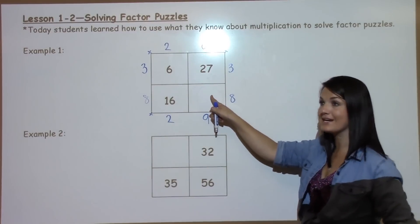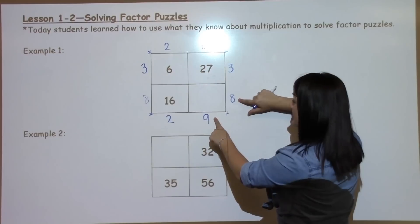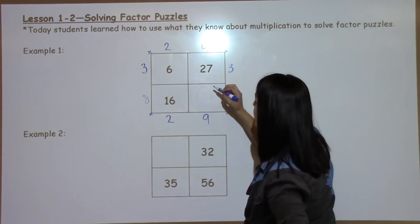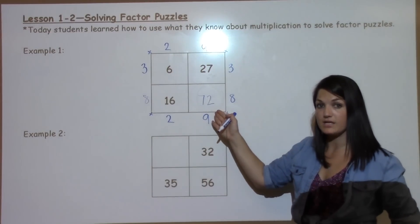Now, to find what goes here, I just have to multiply these two numbers, just like I would in a multiplication table. They go together. 8 times 9, 72. My missing spot is 72.